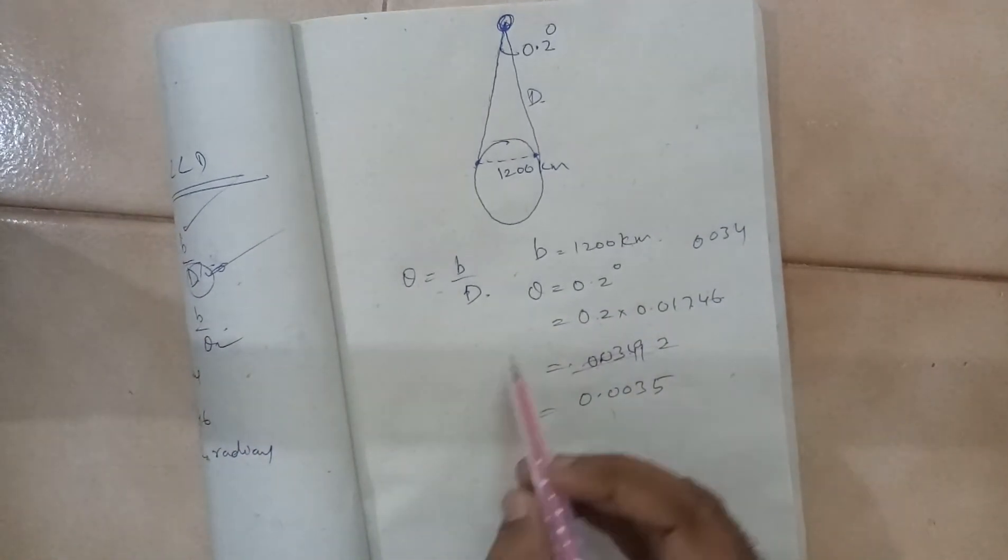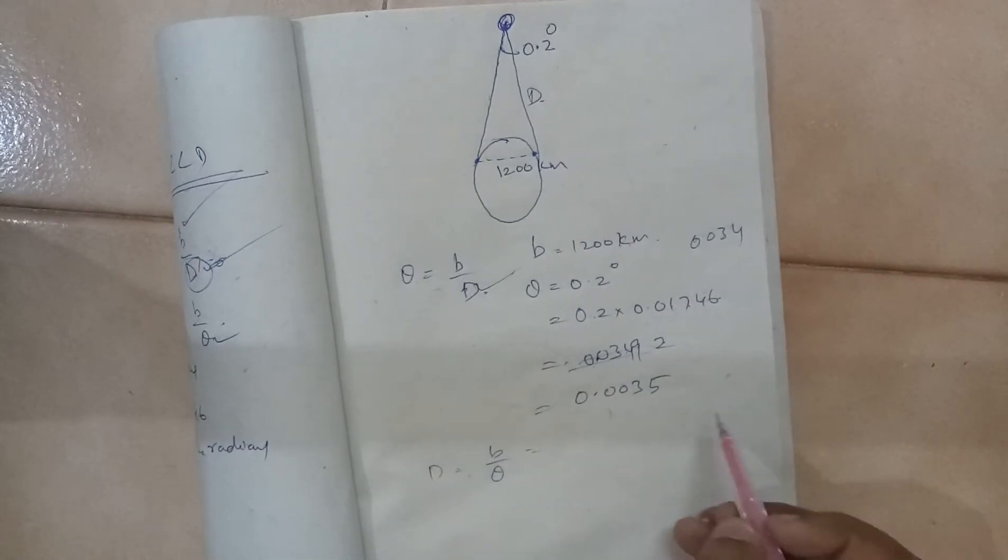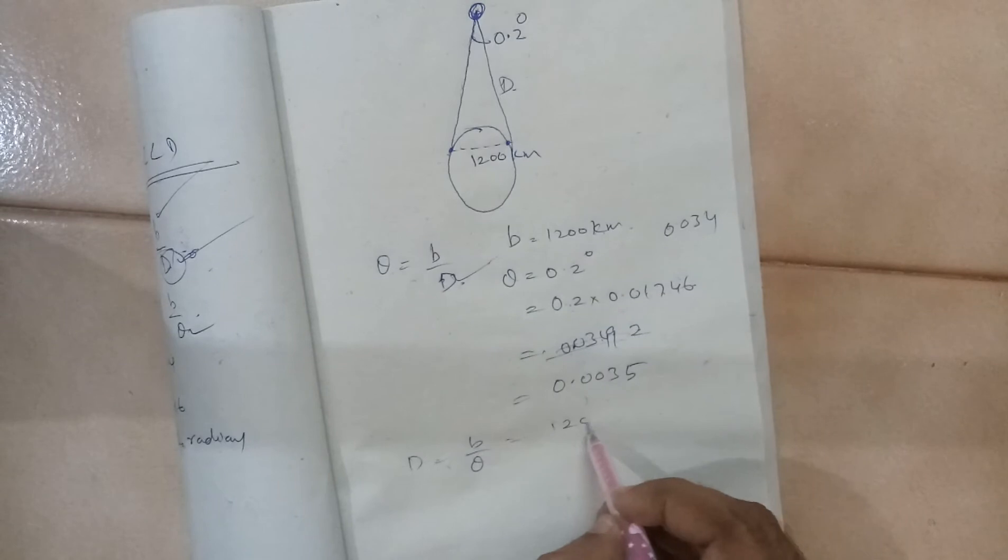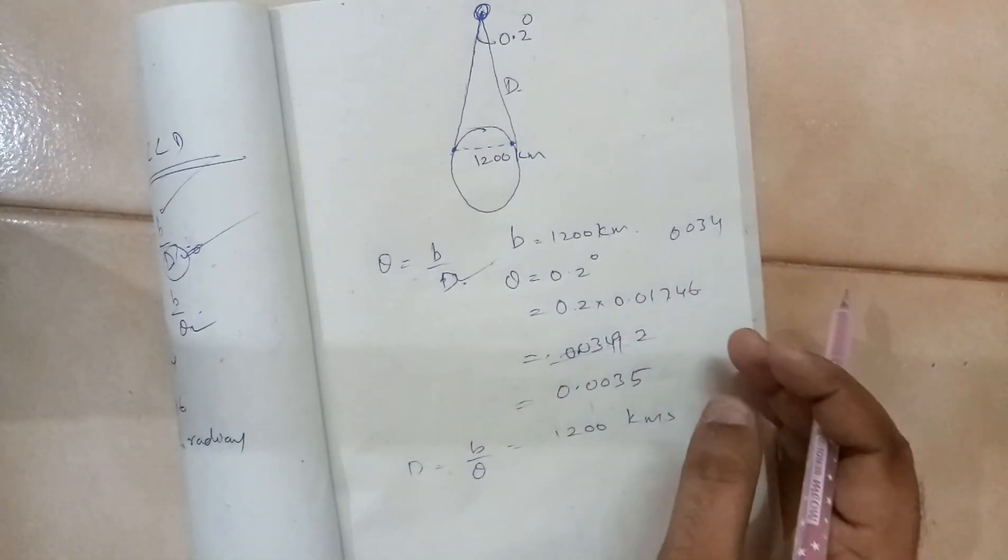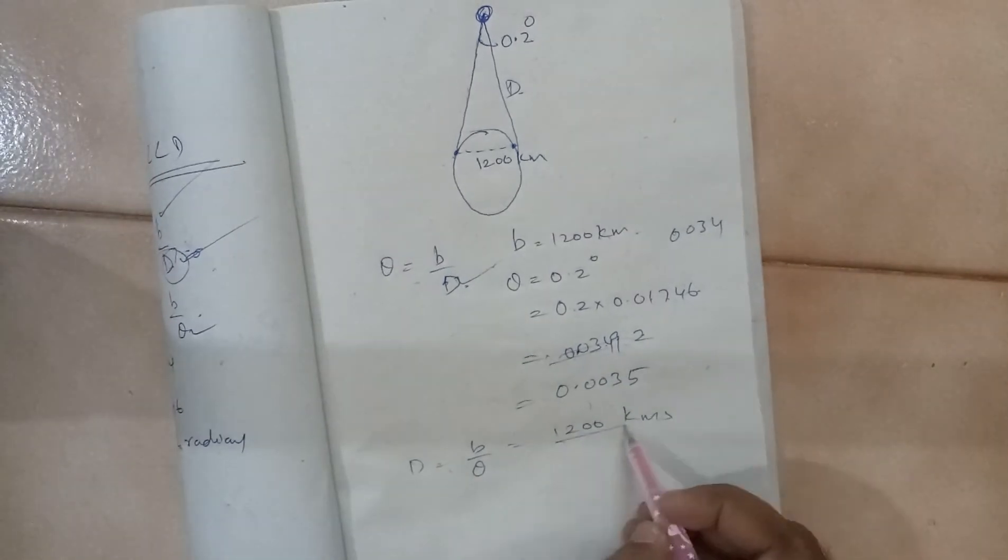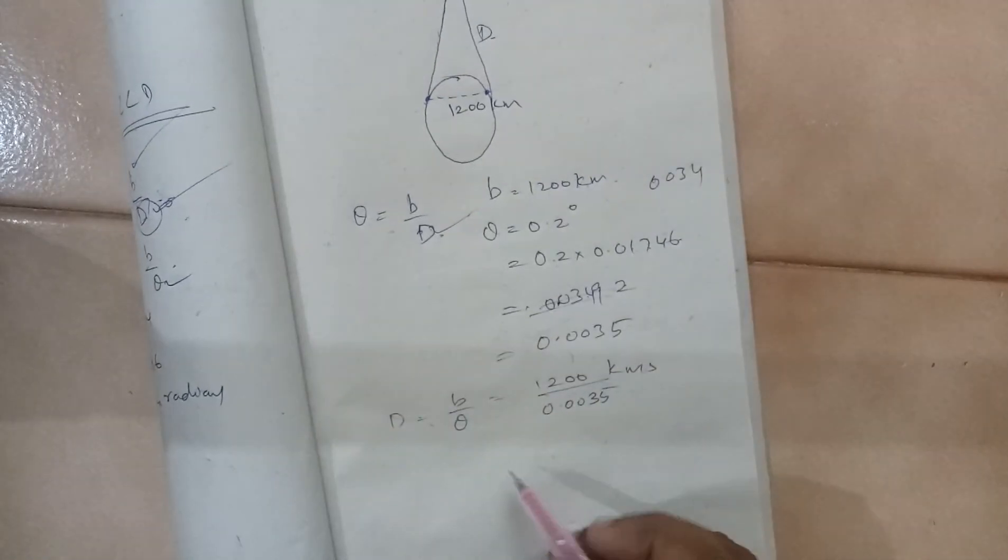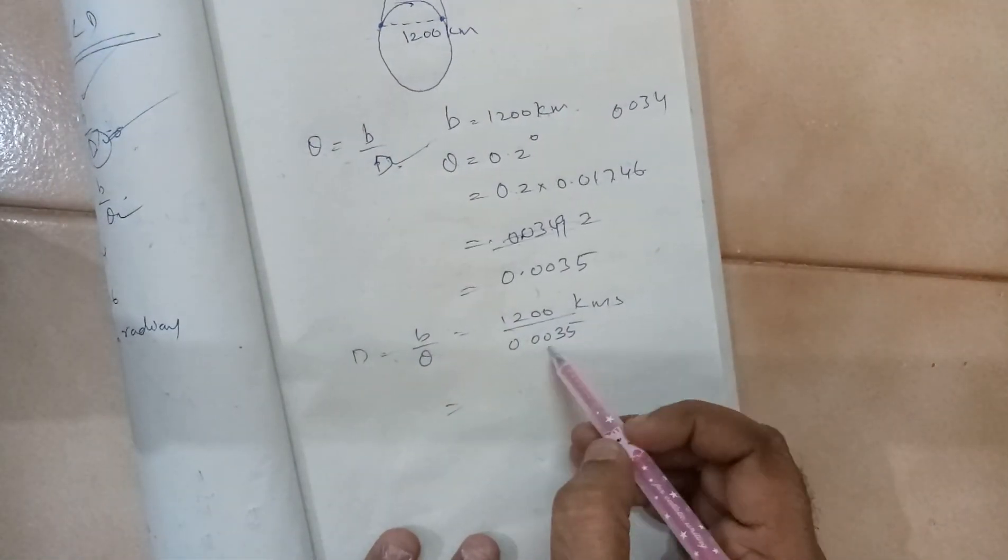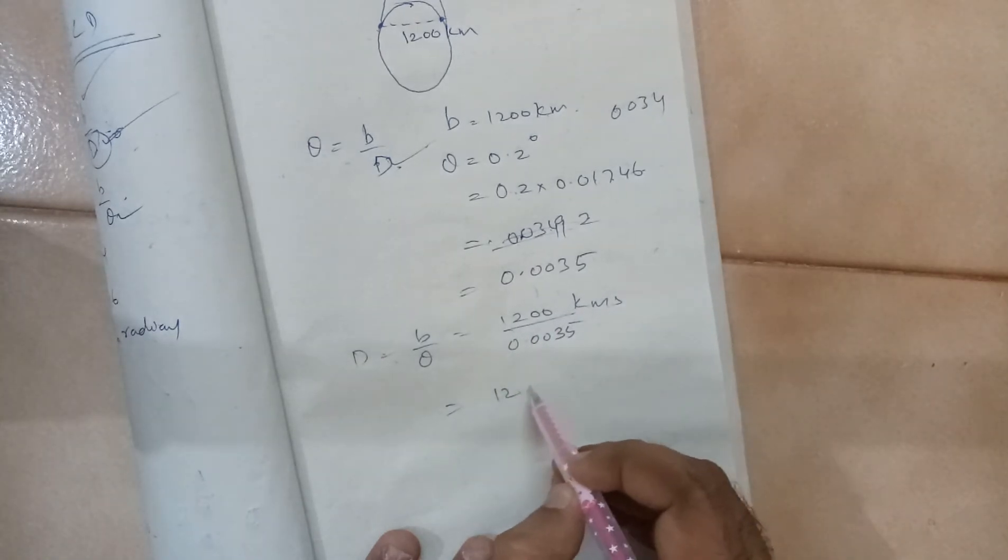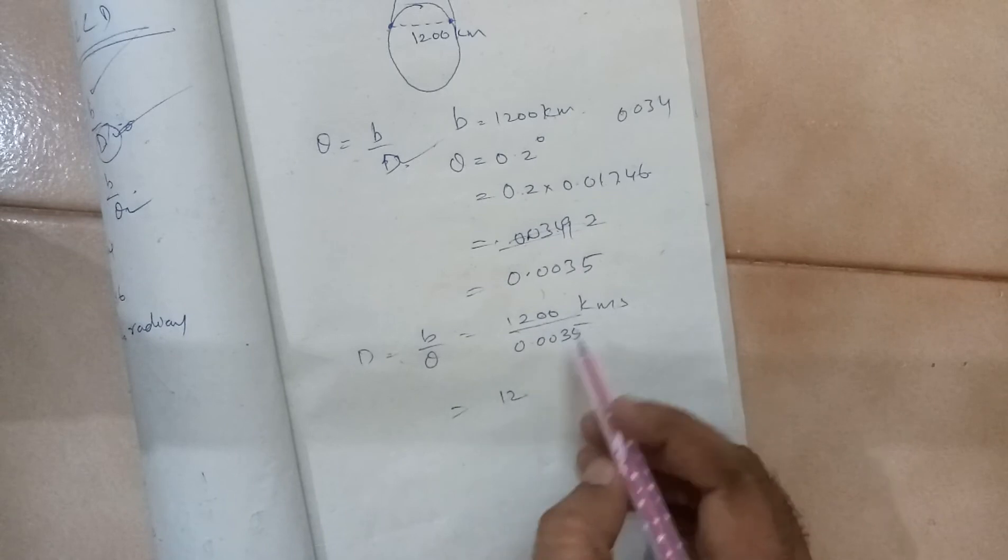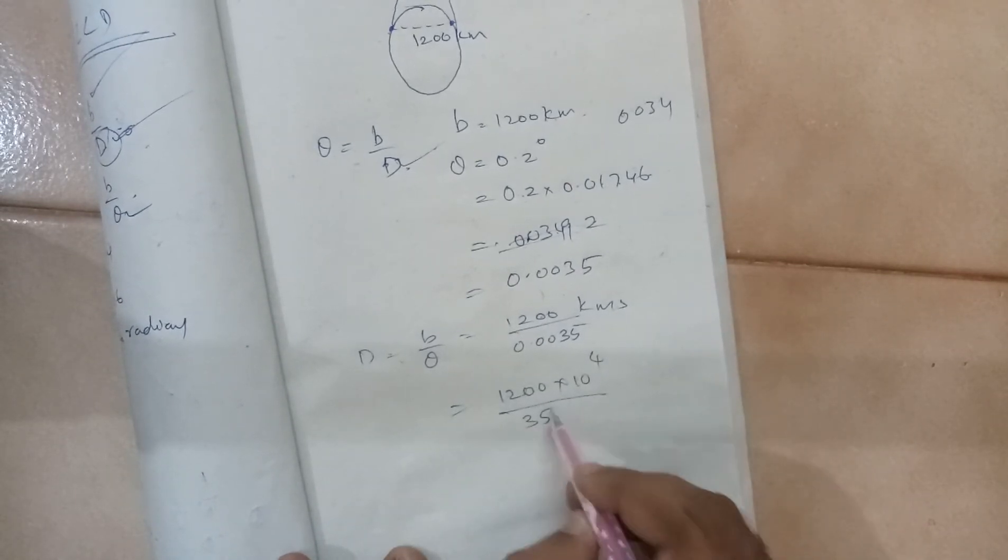So here we want to find out D. D will be equal to B by theta. B is 1200 km because the distances are usually measured in km - they are large distances. 1200 divided by 0.0035. So how do we solve it? Multiply numerator and denominator by 10 to the power 4. So we get 1200 into 10 to the power of 4 divided by 35.